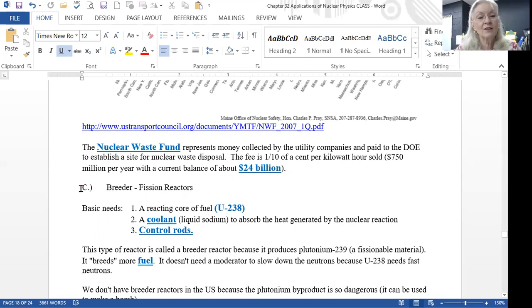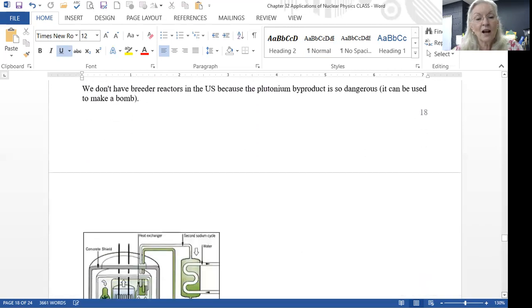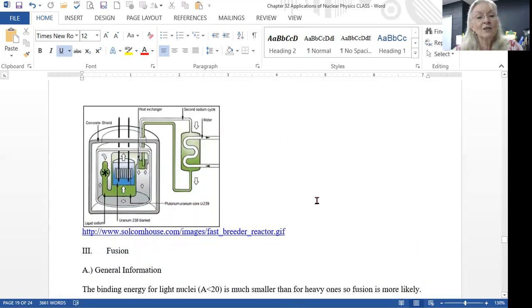There are other kinds of reactors. We have breeder fission reactors. We don't have any of these in the United States operating for power production. With a breeder reactor, they use uranium-238. Usually liquid sodium is their coolant and they do have control rods. These type reactors breed more fuel than they use up. So the spent nuclear fuel could actually be used to fuel a second type of reactor. There was concern that the plutonium byproduct could be stolen by terrorist groups and then be used to create nuclear weapons. And so the United States doesn't have breeder reactors at this point in time.